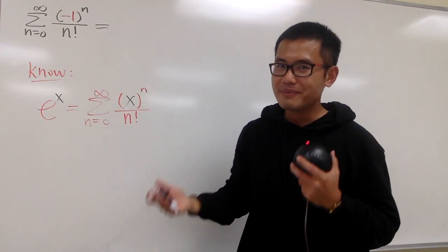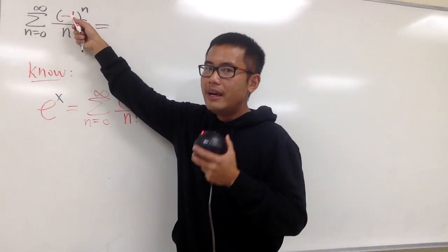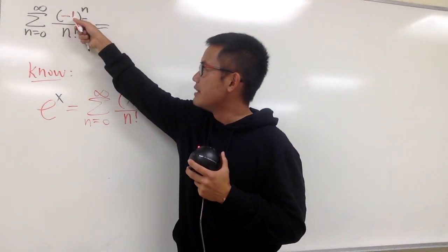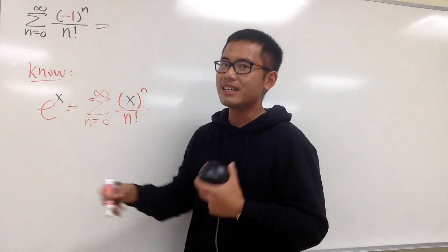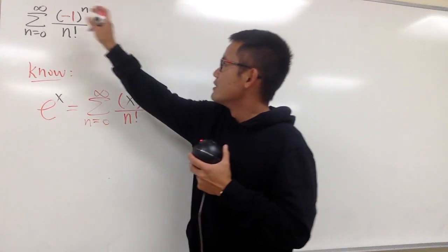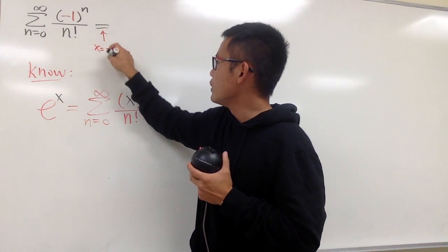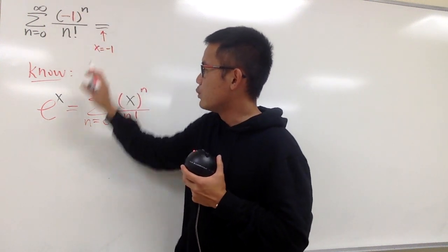So what does that mean? That means x is equal to negative 1, and all I have to do now is to plug in negative 1 into this x. I can calculate the value of that infinite series, right? So let me just write this down. We know x is equal to negative 1, and I will just plug in negative 1 here.